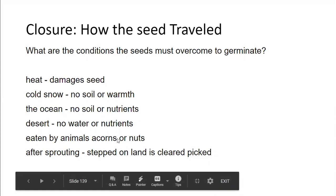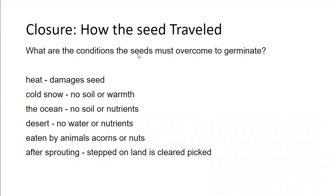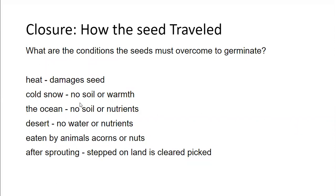Even after sprouting, seeds could be stepped on. It's really important that the conditions are just right for a plant to grow. All of these hazards — heat, cold, lack of water, nutrients, or soil — will prevent a seed from growing into a plant if the conditions are not just right.